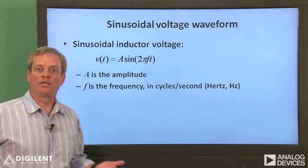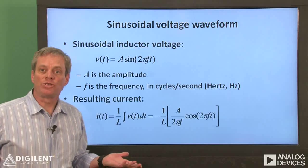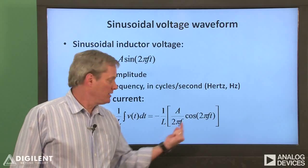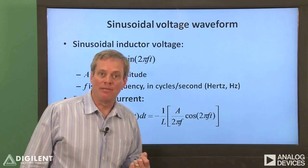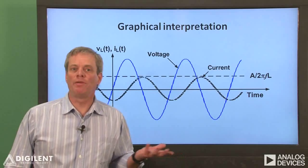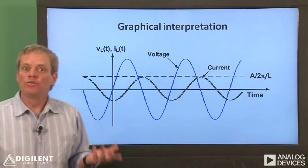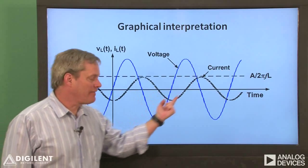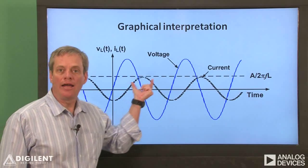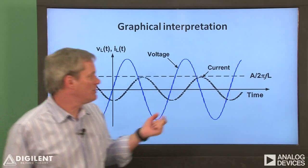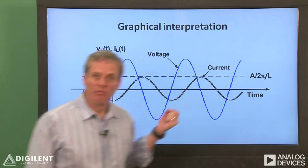If we substitute this into our inductor voltage-current relationship, and do the math, we find that the current through the capacitor should be negative 1 over L times A over 2πF times the cosine of 2πF times T. Graphically, this means that if we apply a voltage sine wave with amplitude A, the blue line, to our inductor, we should get a current that looks something like this. The peaks of the current waveform are a quarter of a wave behind the voltage waveform. The amplitude of the current is going to be 1 over 2πF times L times the amplitude of the voltage waveform.